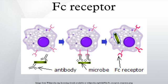All of the FC-gamma receptors belong to the immunoglobulin superfamily and are the most important FC receptors for inducing phagocytosis of opsonized microbes.